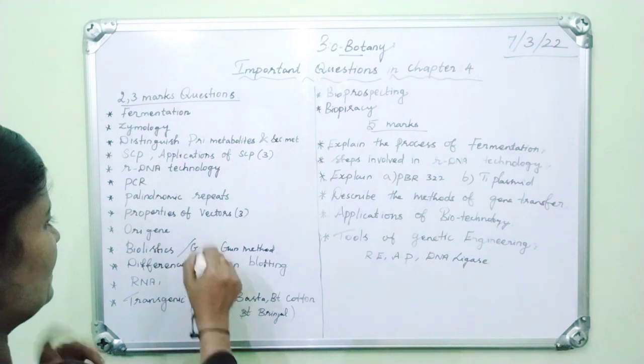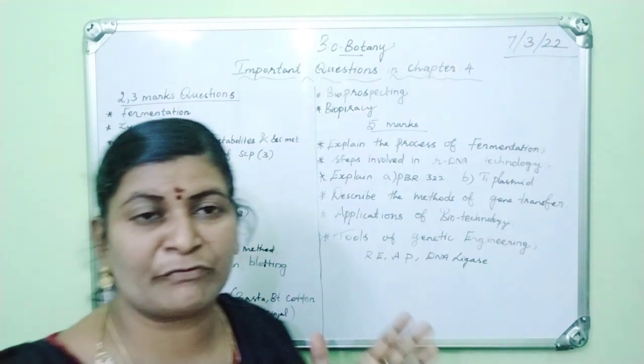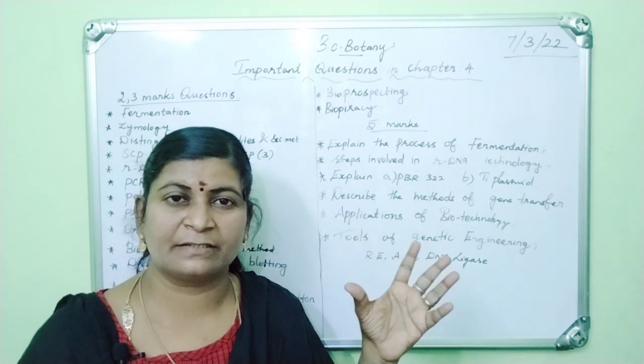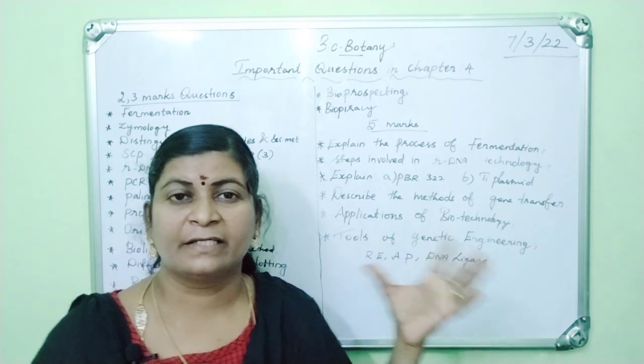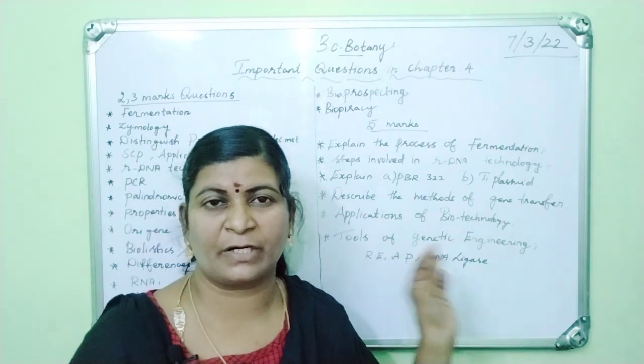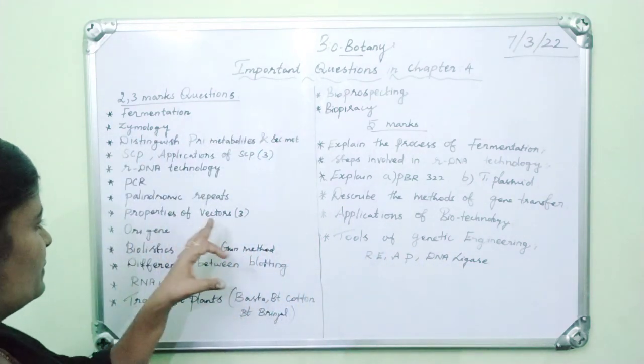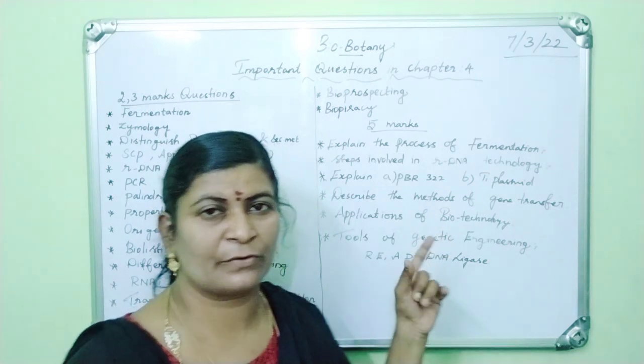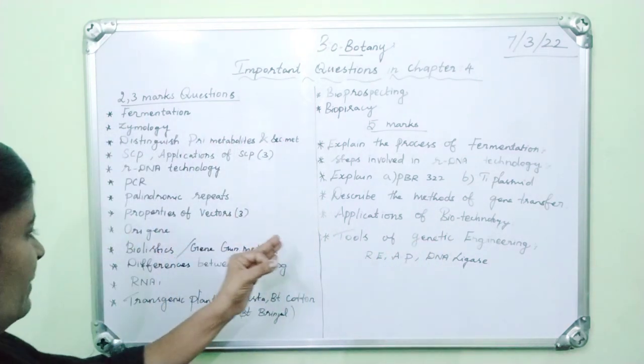Then properties of vectors. I think four or five properties are there for vectors. You should write any three properties. It may ask as a three mark question. Then origin. Origin is used for the replication purpose.